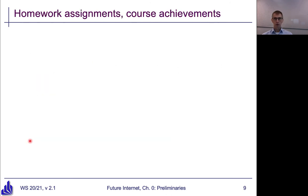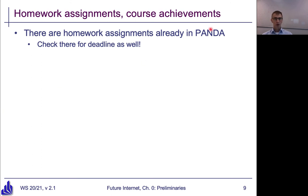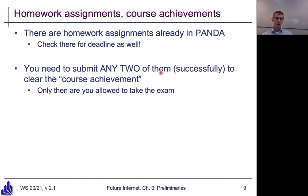Let's move on to the homework assignments. There are homework assignments already in Panda. They will have deadlines very soon — I still need to plan that in more detail once we have done more class recordings to see how the class progresses. You will need to submit any two of them to clear the course achievement. And by submit, I don't mean just to submit them — you need to submit them successfully. I will read through them, grade them, and let you know by individual feedback whether it was okay or whether you should improve. Only if you have two successfully graded homework assignments will you have the course achievement, and only then are you allowed to take the exam.